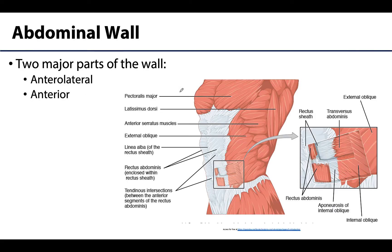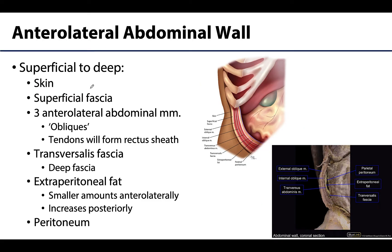We're also going to spend some time on the neurovasculature of the abdominal wall and introduce the term umbilical folds or peritoneal folds, which we'll see on the deep surface of the anterior abdominal wall. There are two major walls we'll discuss: the anterior lateral and the anterior. We'll start with the anterior lateral as it's a bit more complex. We are not discussing the posterior wall here, as that was covered during the back and spinal cord session.